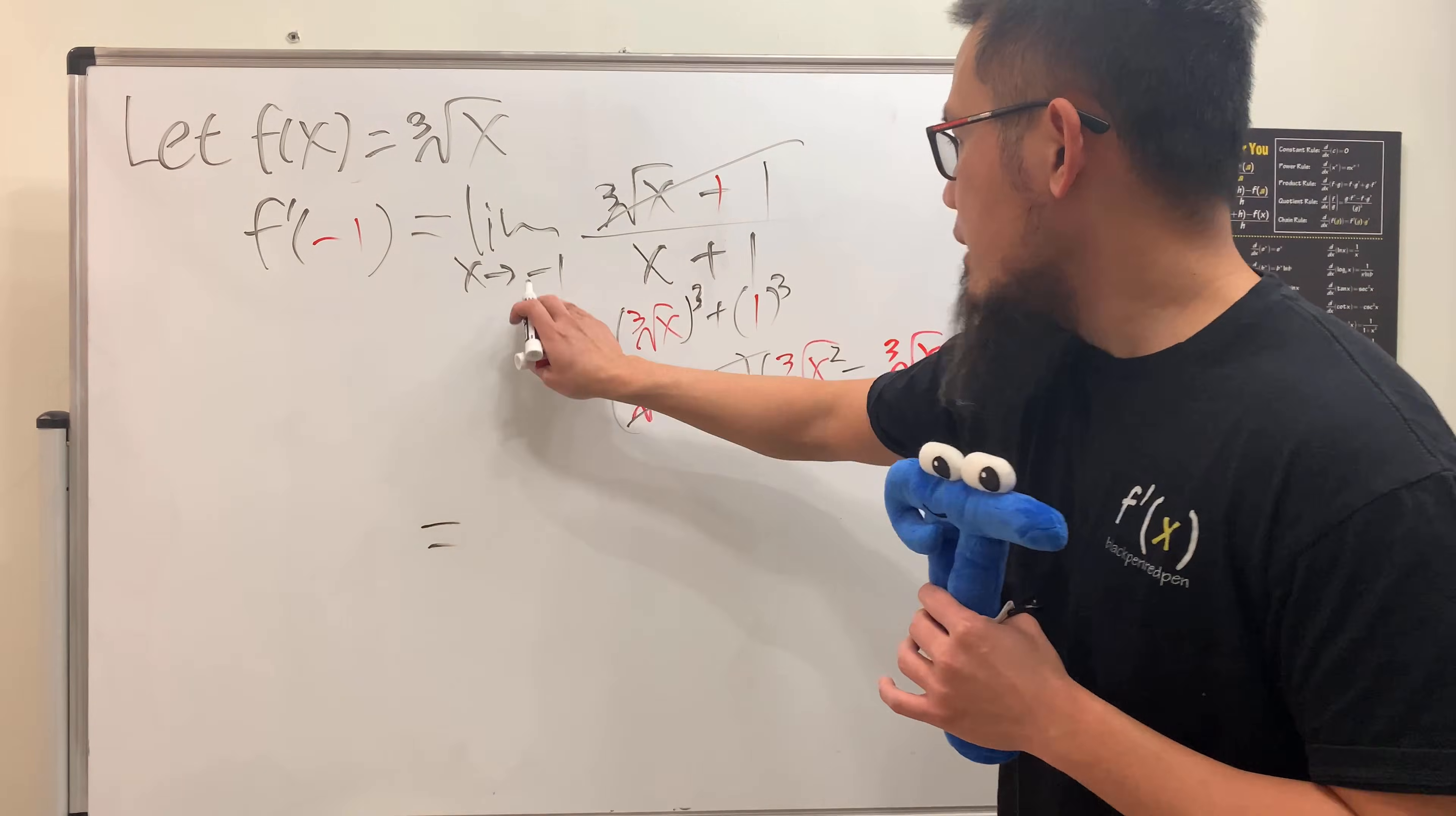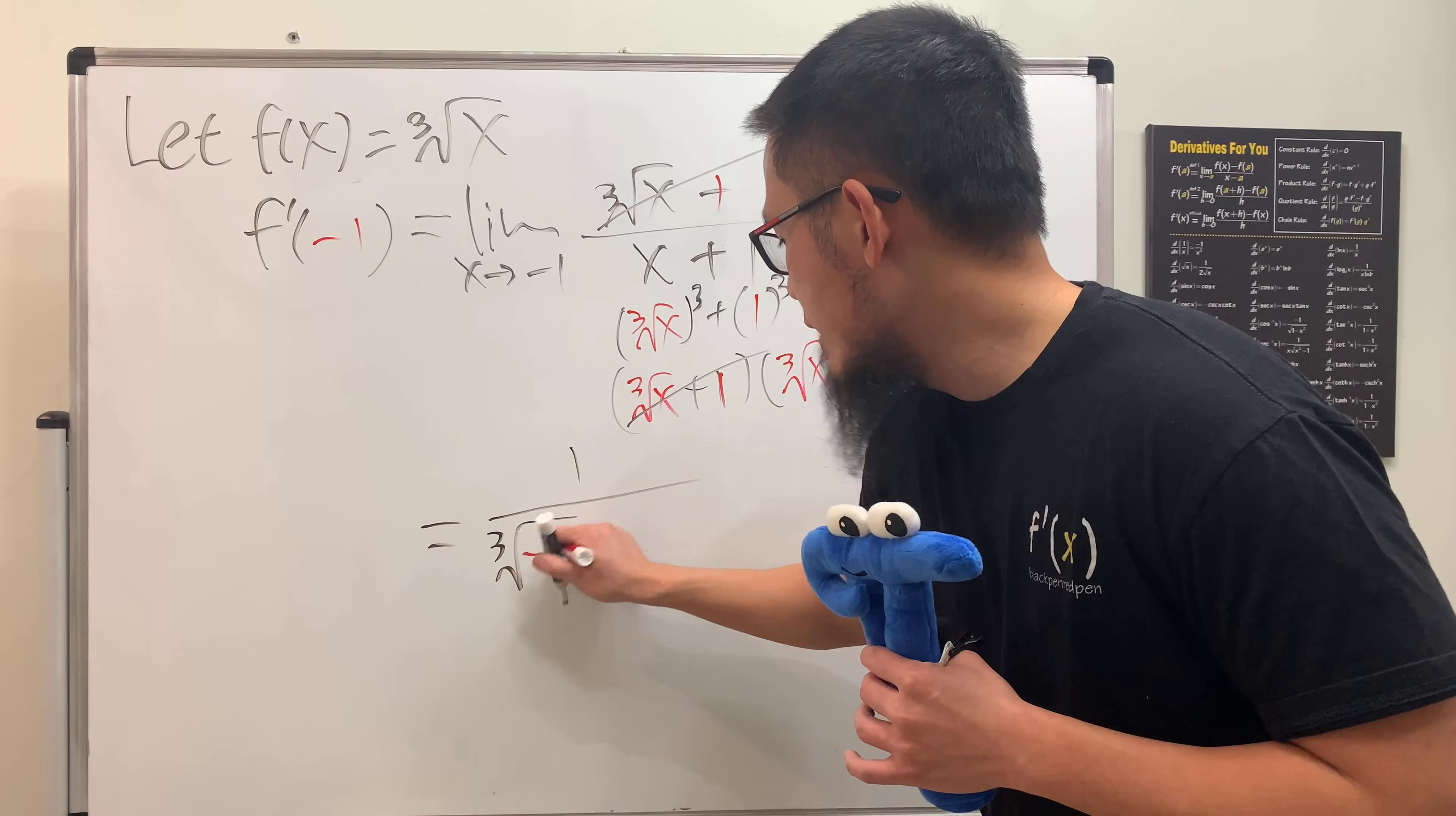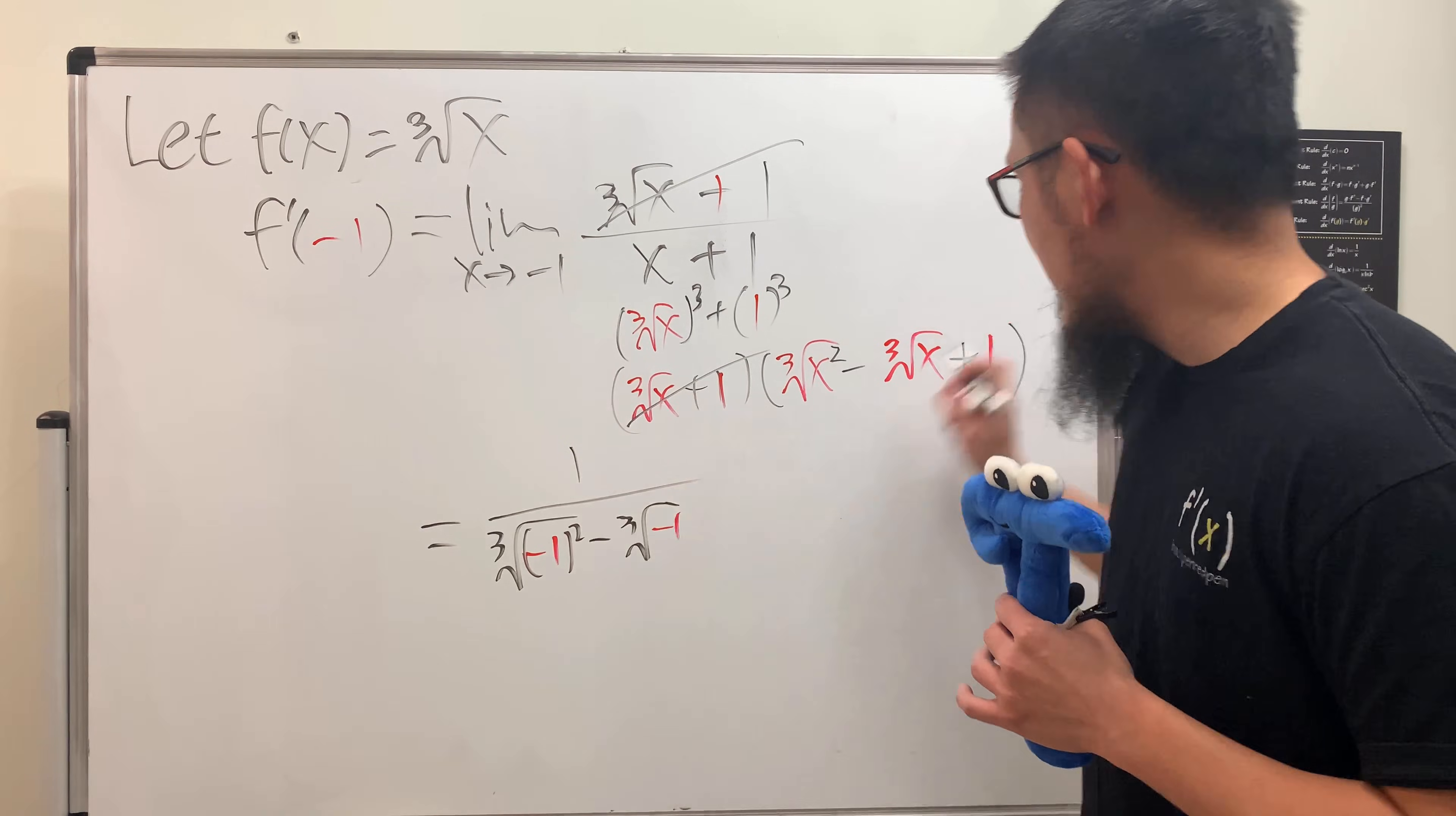So now, you just have to do what? Putting negative 1 right here and right here, we actually just have 1 over. Here we have the cube root of negative 1 squared,